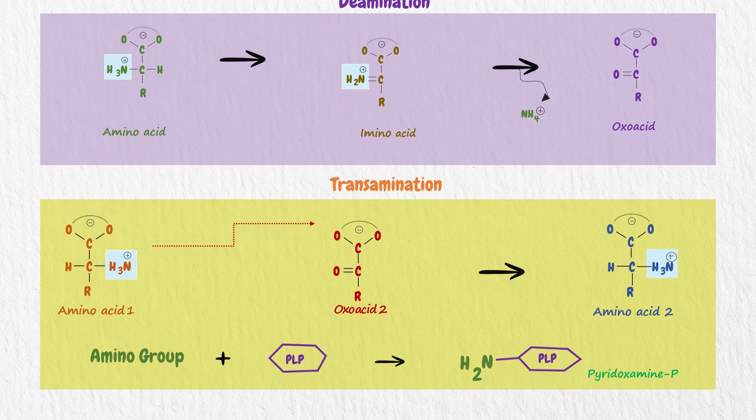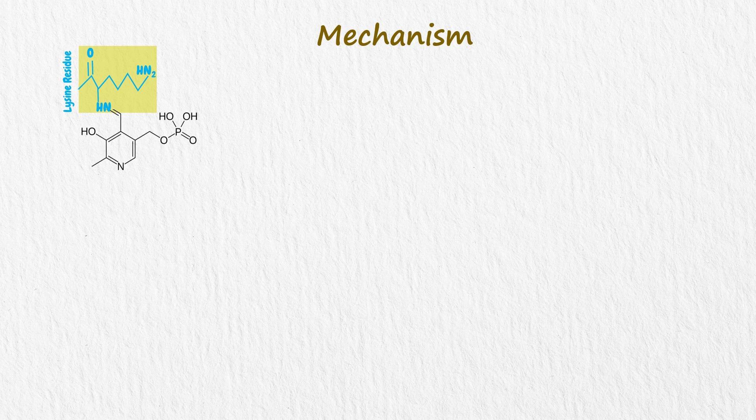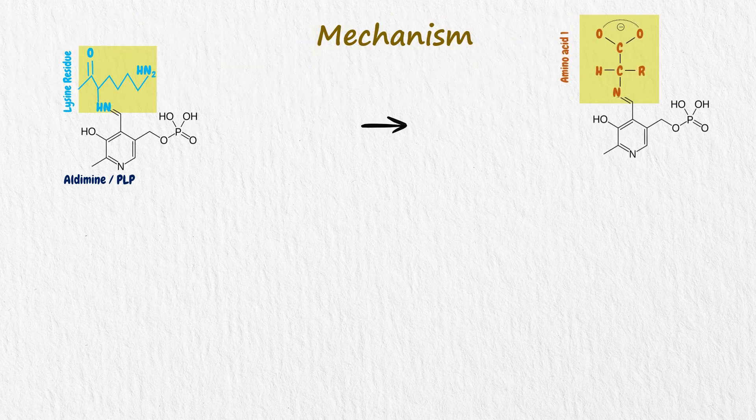Let's understand its mechanism. The aldehyde group of pyridoxal phosphate is covalently bounded to a lysine residue. This type of compound is known as aldimine or Schiff base. During the reaction, amino acid 1 displaces the lysine residue, and aldimine is formed.